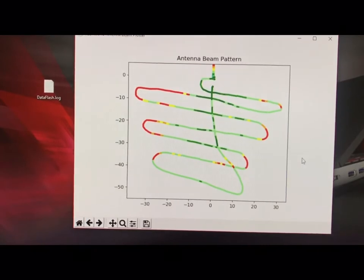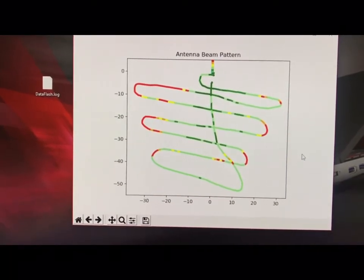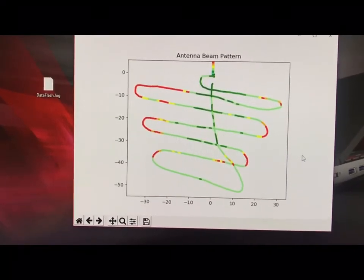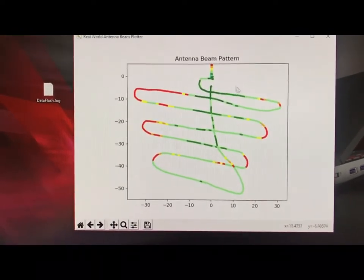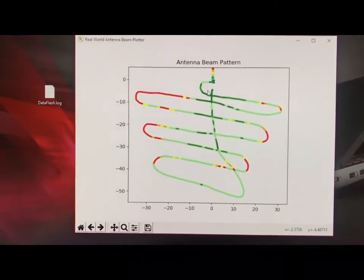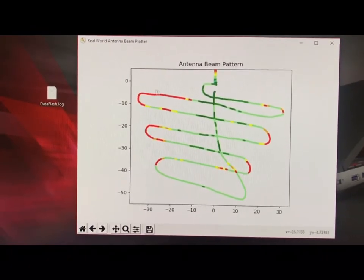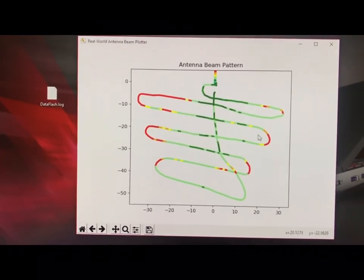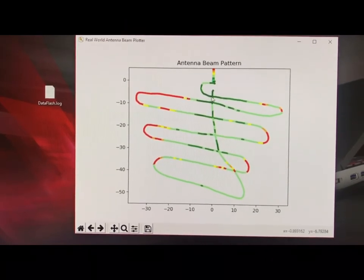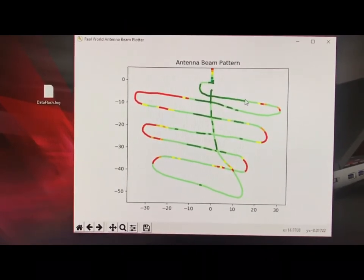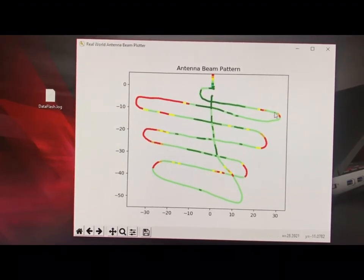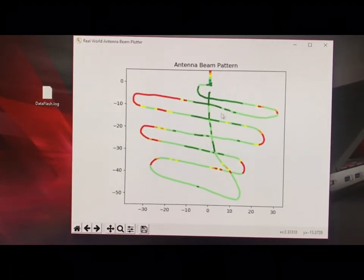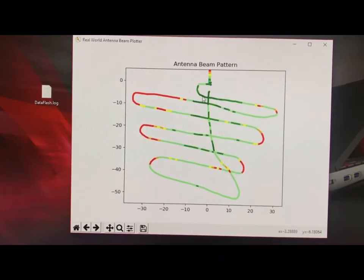At first glance this doesn't look like a typical radiation pattern of an antenna that you see in data sheets. That's because my program basically plots the coordinates of the path that I have walked, and at each point it measures the RSSI from the receiver. Based on the RSSI strength, it gives it a color code.